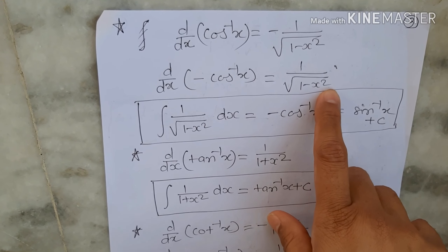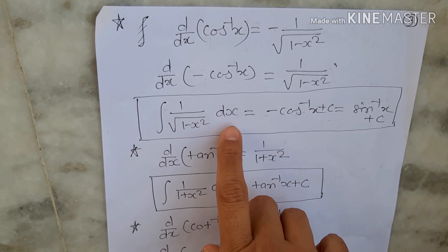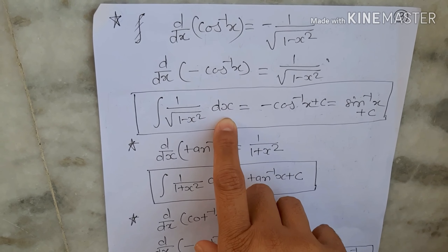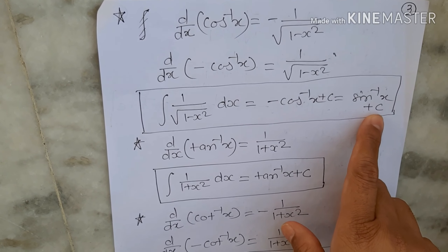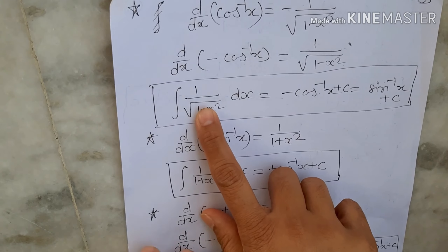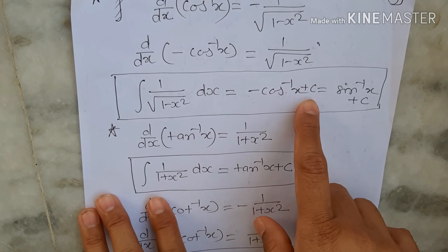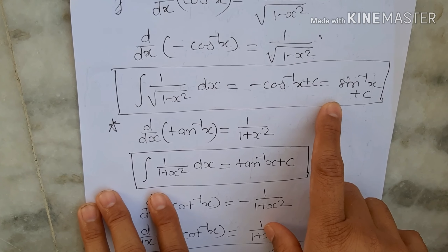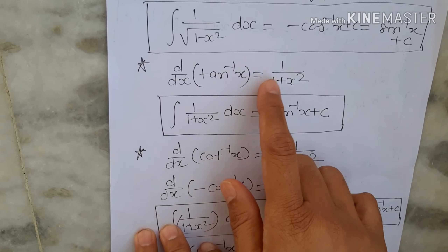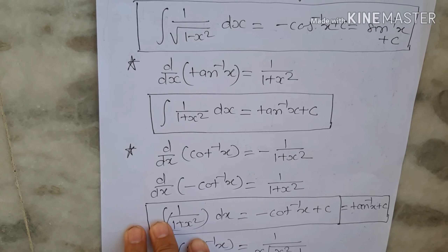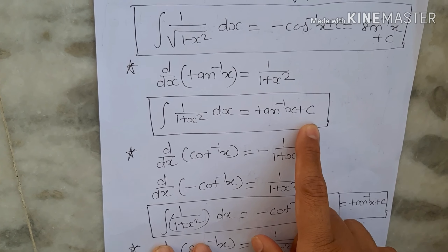We have d/dx of (-cos⁻¹x) equals 1/√(1-x²). So integral of 1/√(1-x²) dx equals sin⁻¹x plus c, and equivalently equals -cos⁻¹x plus c. Also, d/dx of tan⁻¹x equals 1/(1+x²), so integral of 1/(1+x²) dx equals tan⁻¹x plus c.